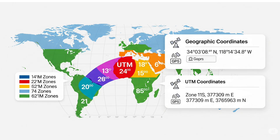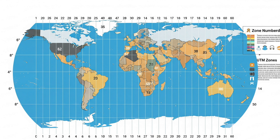In the northern hemisphere, northing starts from the equator at 0 meters. But in the southern hemisphere, the equator is set to 10 million meters to keep all values positive.